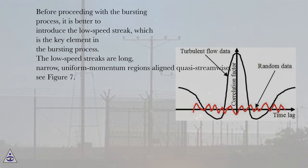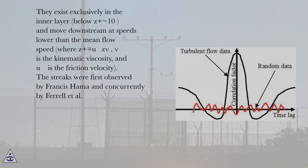The low-speed streaks are long, narrow, uniform momentum regions aligned quasi-streamwise. See Figure 7. They exist exclusively in the inner layer (below z+ ≈ 10) and move downstream at speeds lower than the mean flow speed.